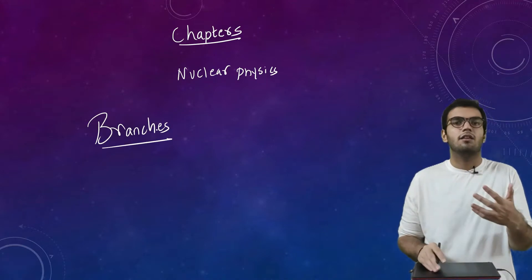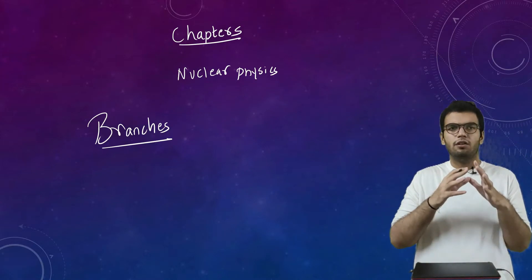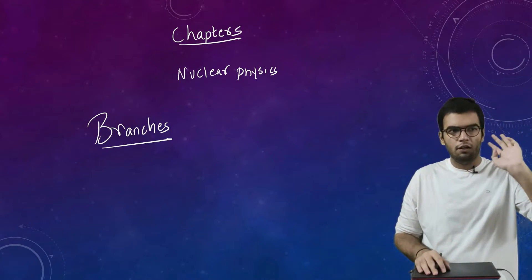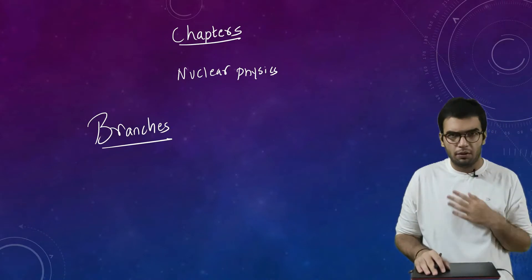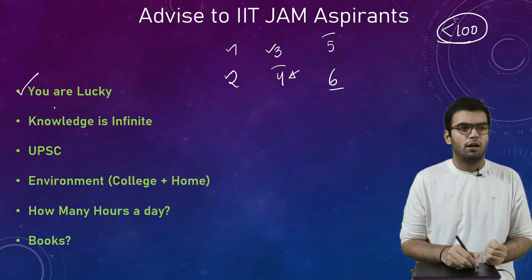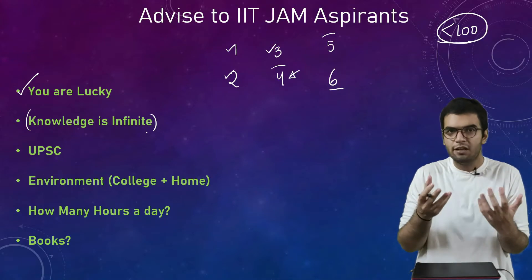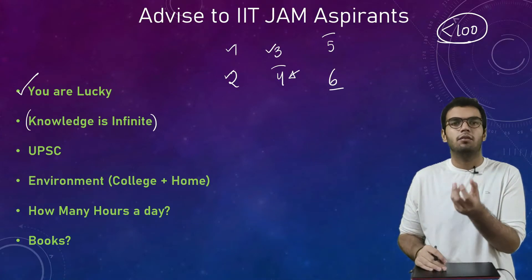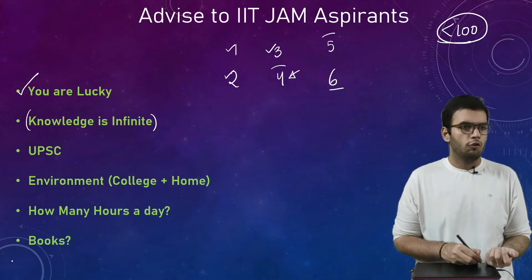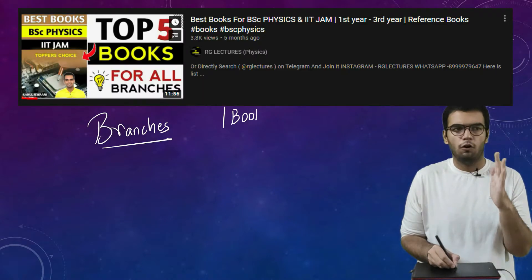But in graduation, there are branches. In physics there are branches, in chemistry there are branches. For example, in chemistry there is analytical chemistry, physical chemistry, full branch. In physics there is solid state physics, full branch again. So basically, there are branches and whenever there are branches, knowledge becomes infinite. You study 10 books, still there will be something which is not known to you in the 11th book.